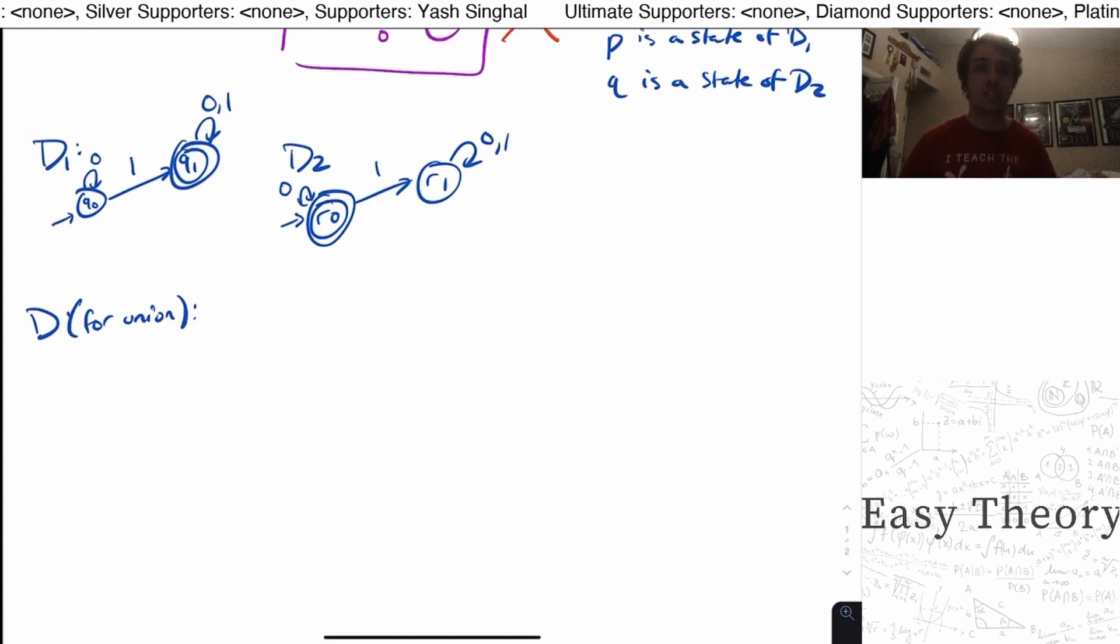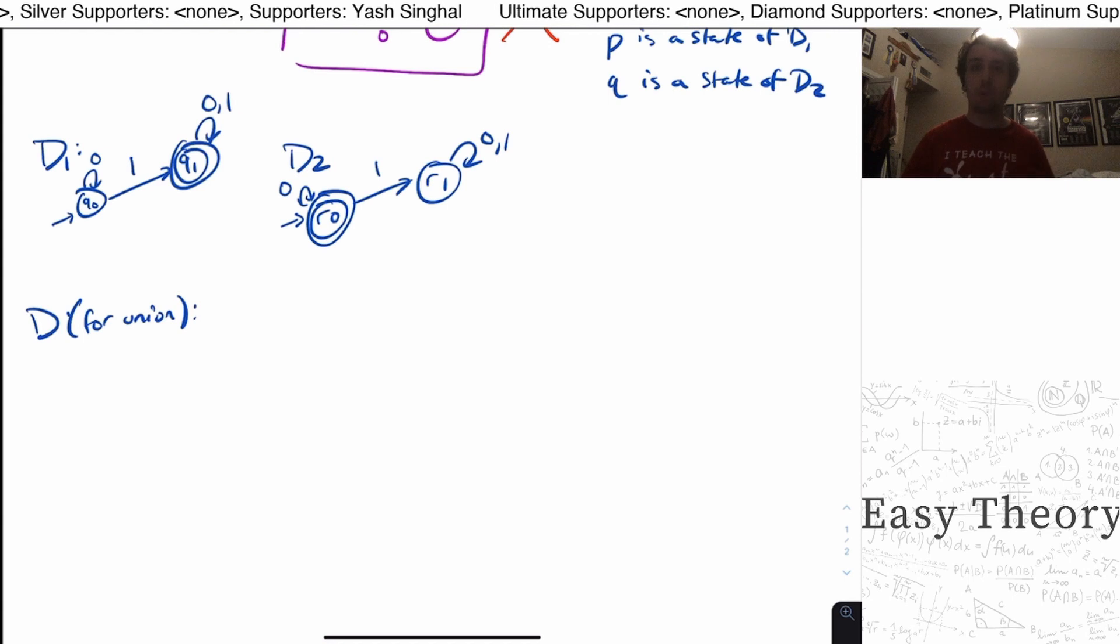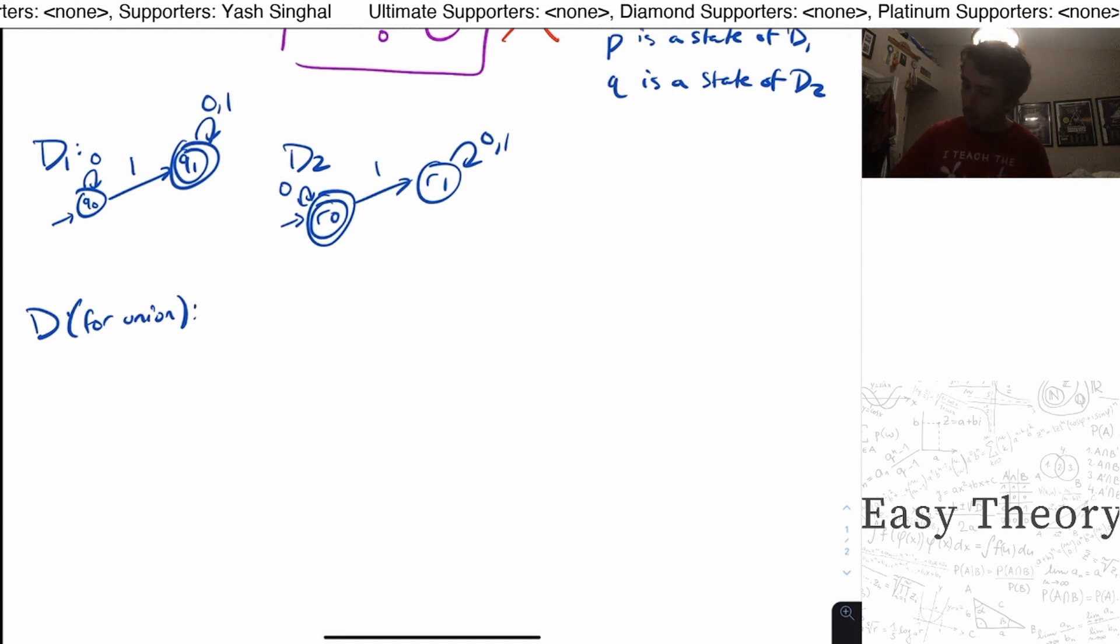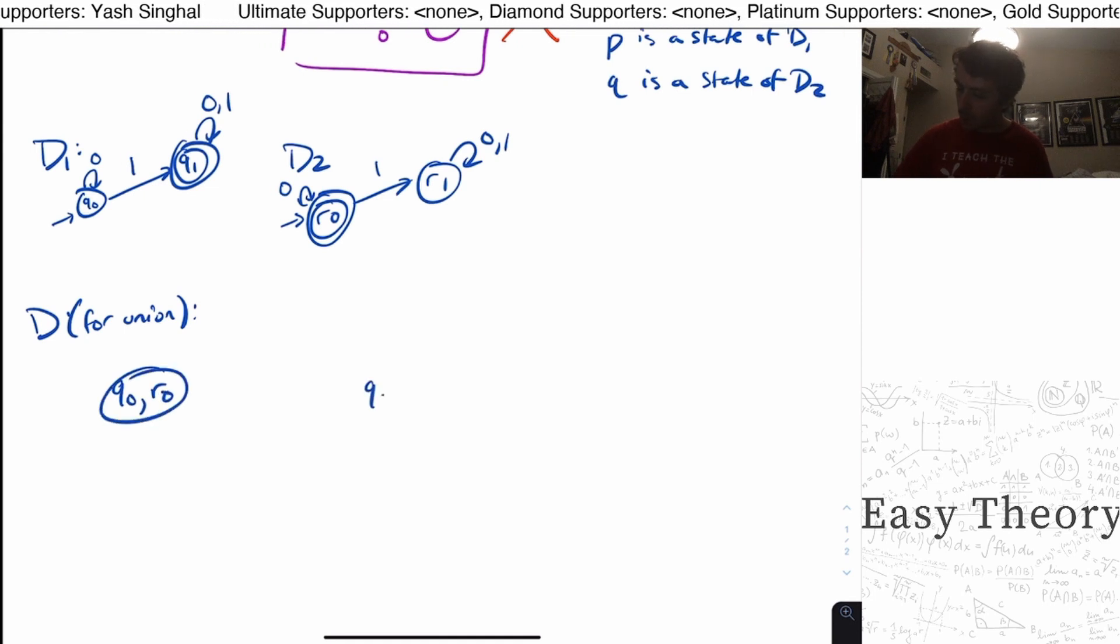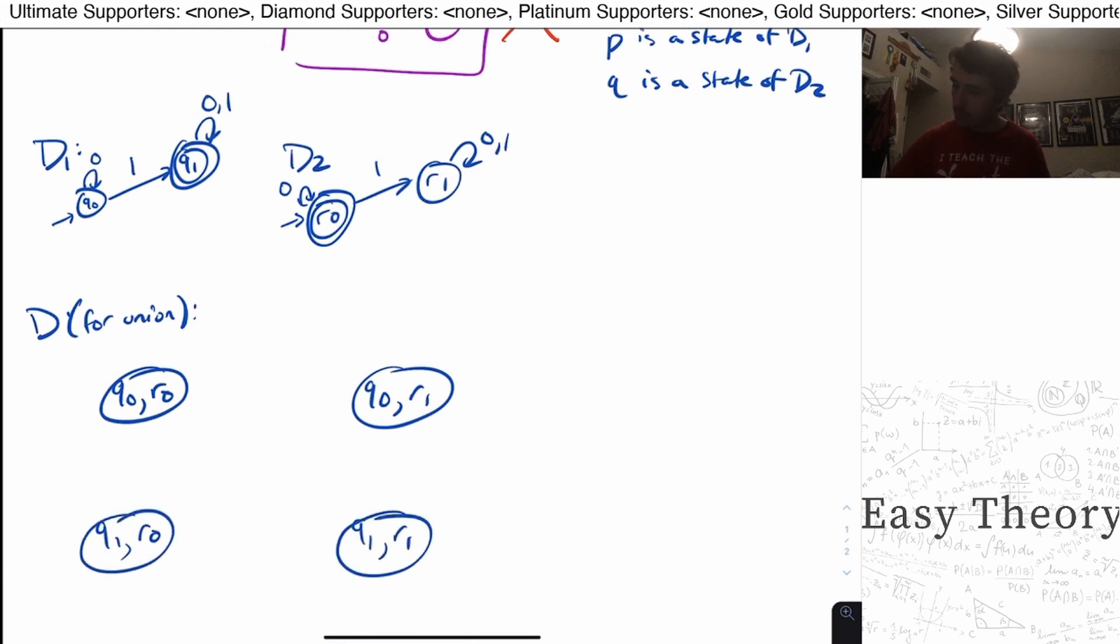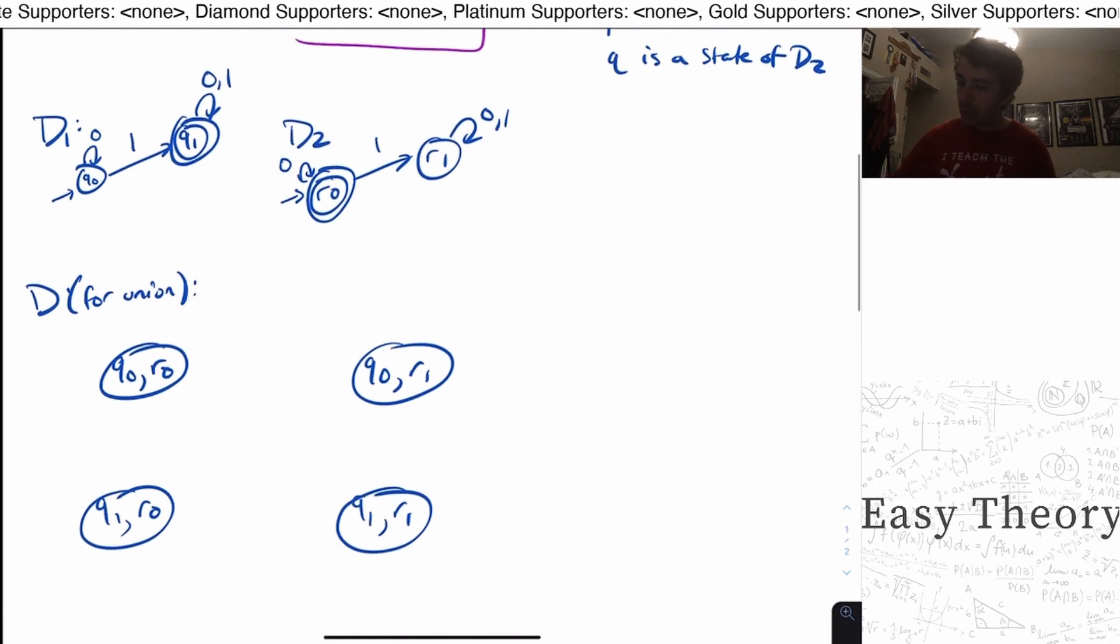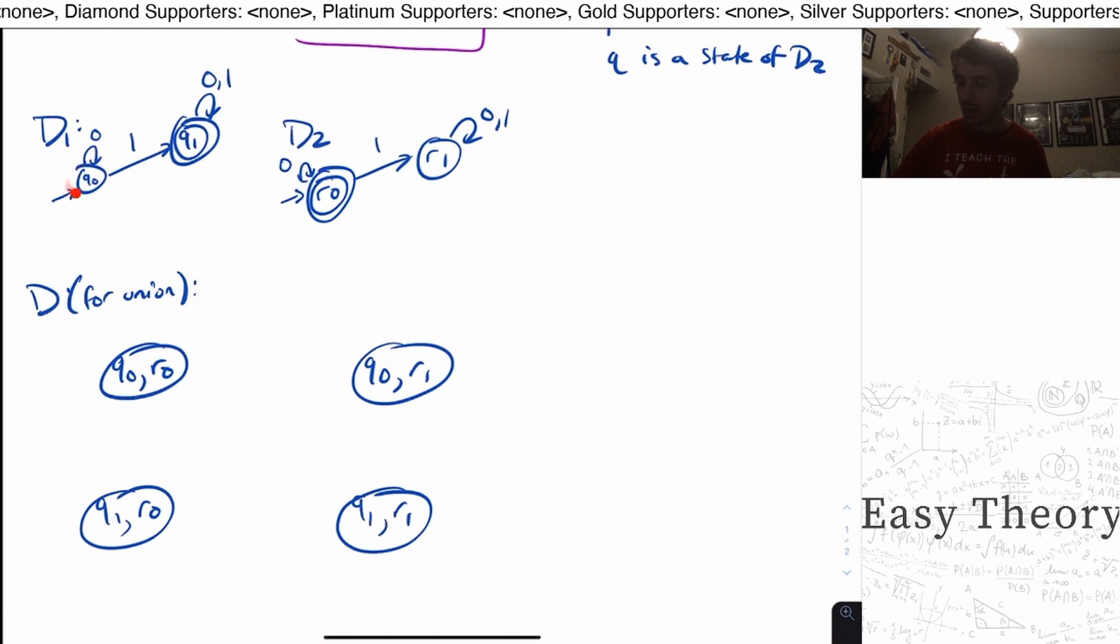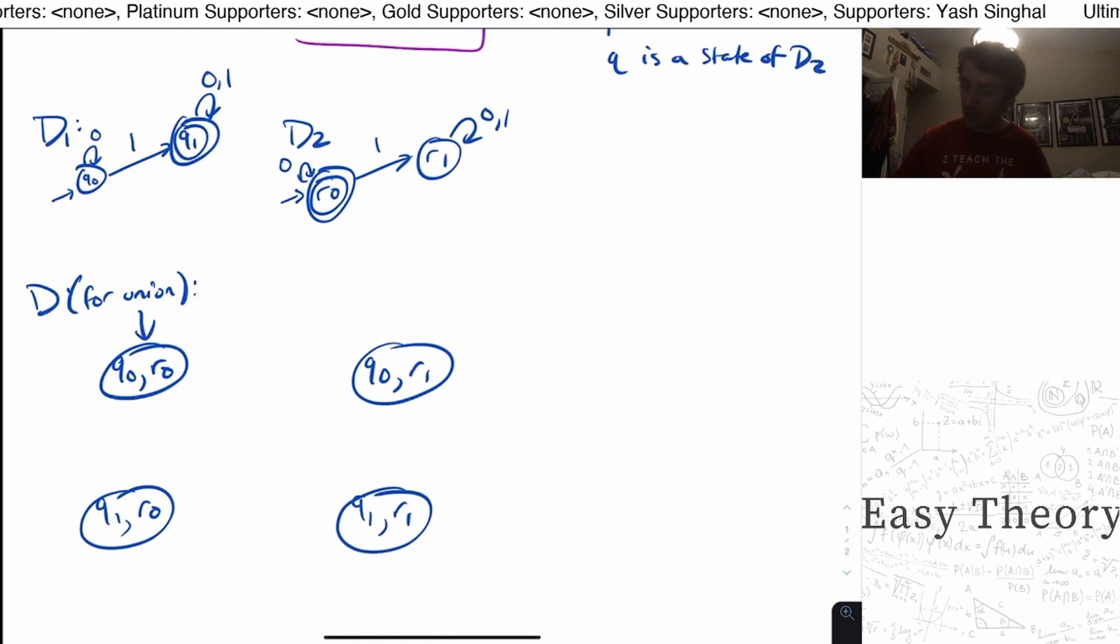So because there are two states in these machines, the product construction will make four states, two times two. So the four states are going to be Q0R0, Q0R1, Q1R0, and Q1R1. The start state is going to be the start state corresponding to the original two machines, so Q0R0. So that's going to be the start state.